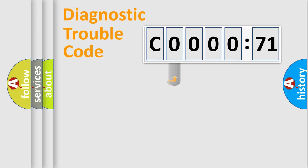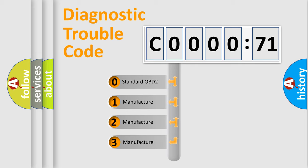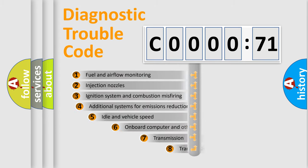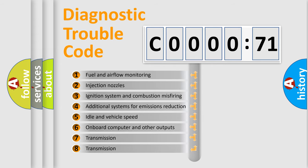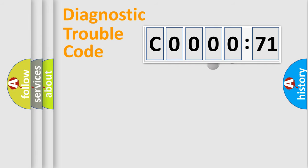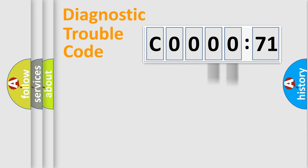This distribution is defined in the first character of the code. If the second character is expressed as zero, it is a standardized error. In the case of numbers 1, 2, or 3, it is a more specific expression of a car-specific error. The third character specifies a subset of errors. This distribution is valid only for the standardized DTC code, and only the last two characters define the specific fault of the group.